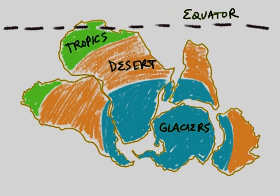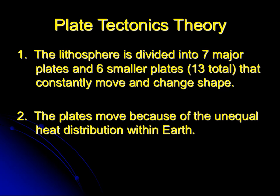When you match up all the continents, all the blue areas had glaciers, the orange-brownish areas are desert, and the green areas are tropics. We know now that not all of these places have tropical climates today, but tropical plants are found there even though their current climate may not be tropical or desert. The plate tectonics theory states that the lithosphere — that crust and upper mantle — is divided into seven major plates and six smaller ones that are constantly moving and changing shape.